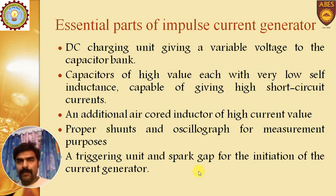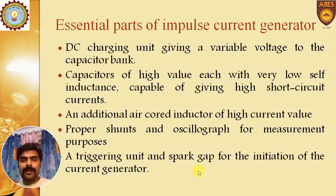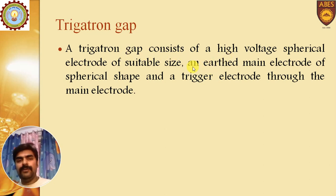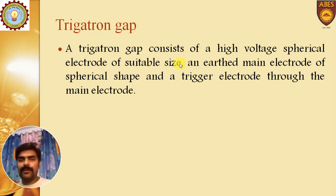The next topic is the trigatron gap. It consists of a high voltage spherical electrode of suitable size, an earthed main electrode of spherical shape, and a trigger electrode through the main electrode. The trigatron has been discussed in detail in previous videos.